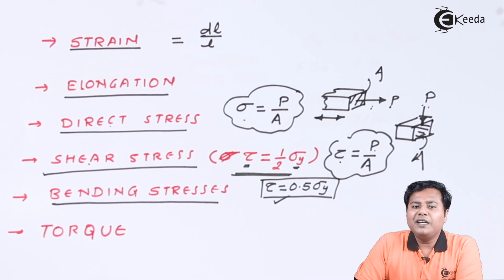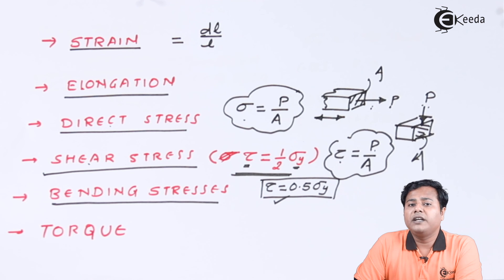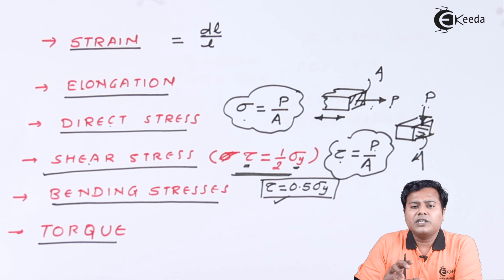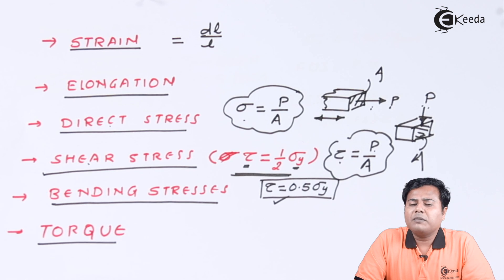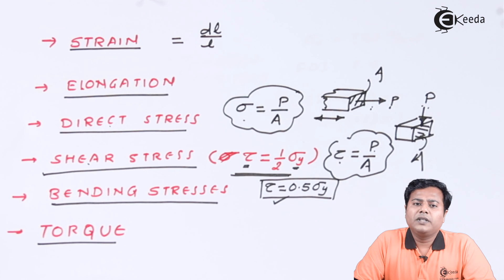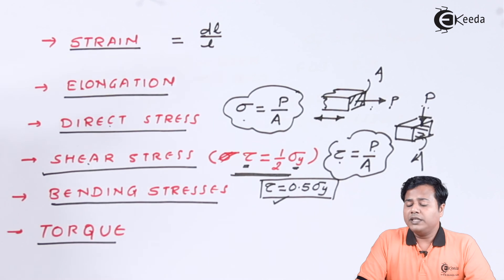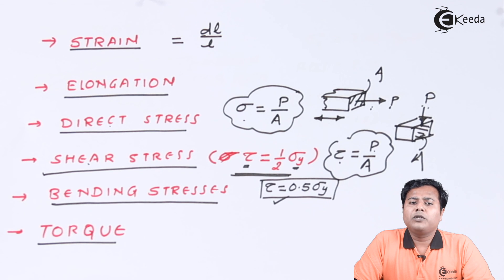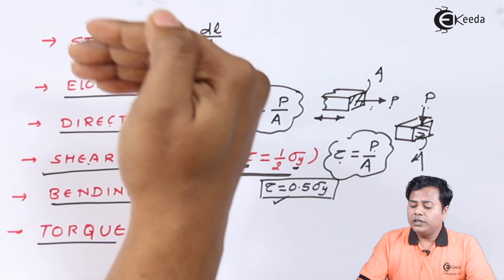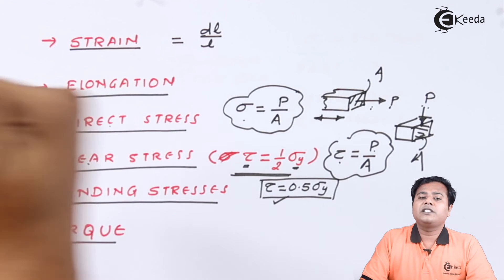Next is bending stress, which comes into picture when loads act in a transverse manner — the classic example is a beam. The stresses induced inside the body in such cases are bending stresses. Then there is torque, which tries to change the area of the cross section in a circular manner, so torque is also an important factor. The static loads we are going to consider will cause all these effects — direct stress, shear stress, bending stress, and torque — and we have to design machine parts to sustain all of them.